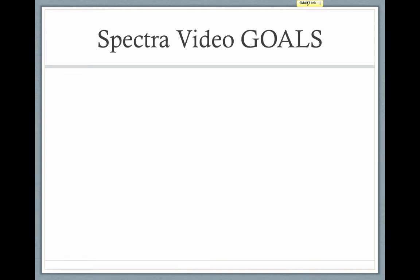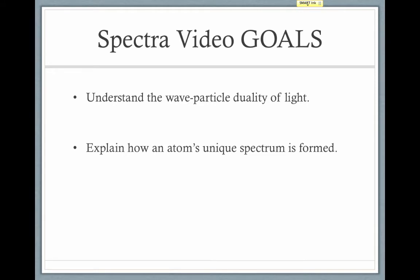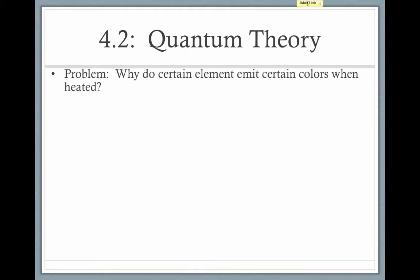Welcome to Unit 7, Video 2, Spectra. By the end of this video, you should understand the wave-particle duality of light and be able to explain how an atom's unique spectrum is formed. As we saw in class, when you heat a pure sample of an element, it emits light. But it doesn't emit all the colors of light. It only emits certain colors when heated.